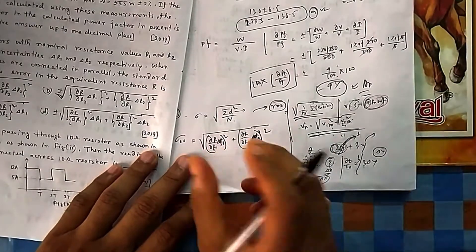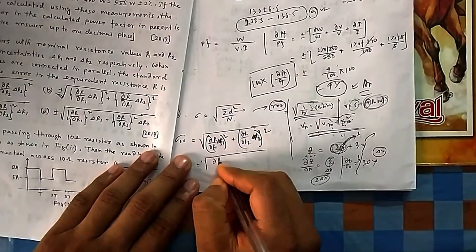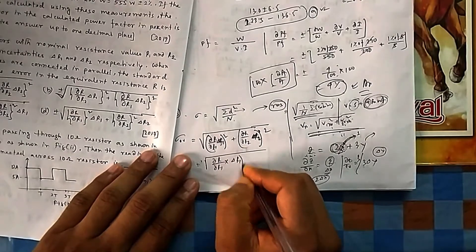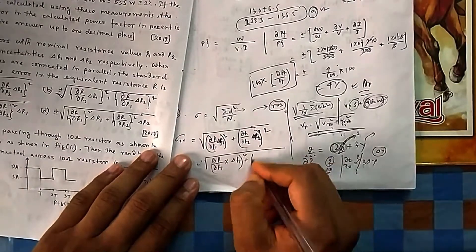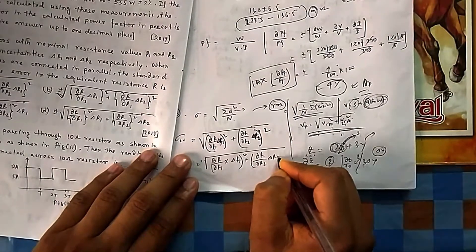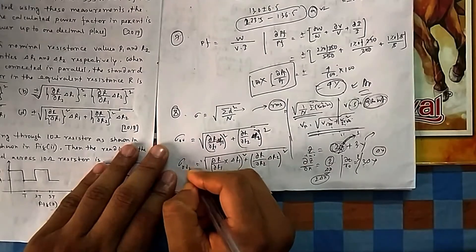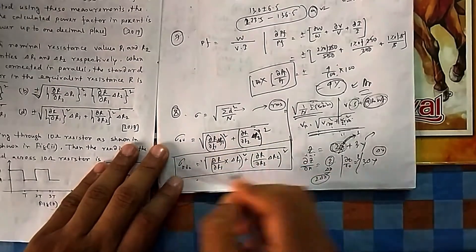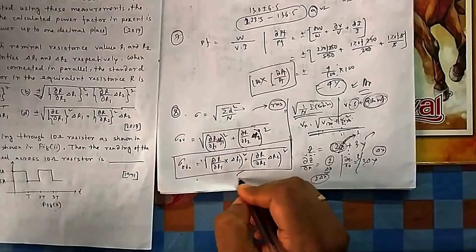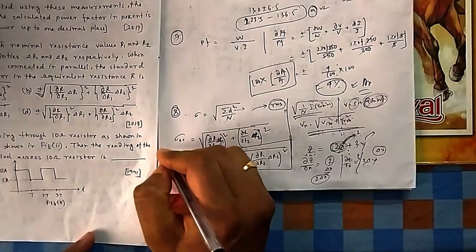So the overall standard deviation formula for the parallel combination is: σ = √[(∂R/∂R1)²·σ1² + (∂R/∂R2)²·σ2²]. This is an important formula for calculating mixed standard deviation using the concept of RMS propagation. The answer is option A.